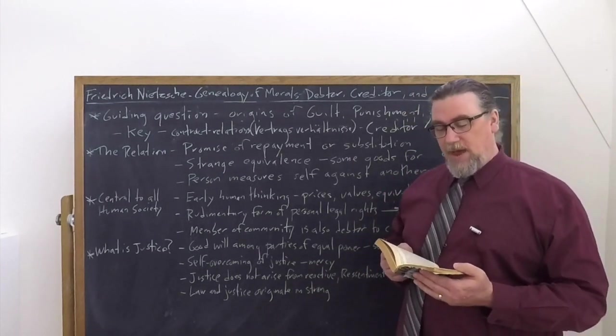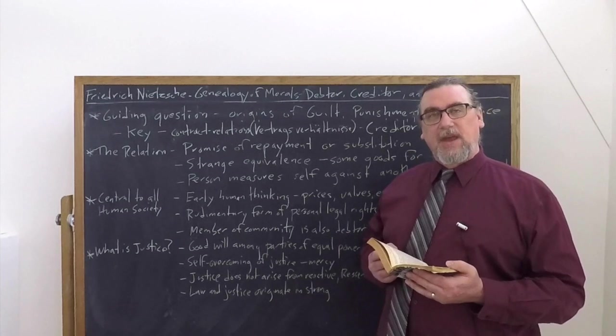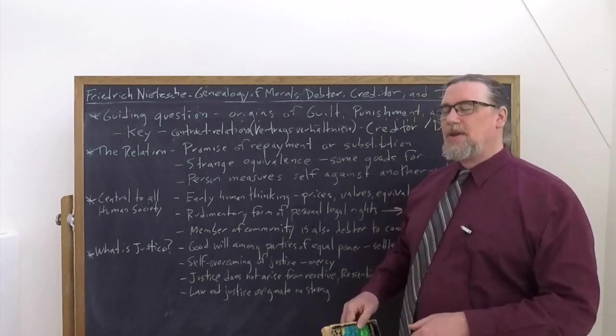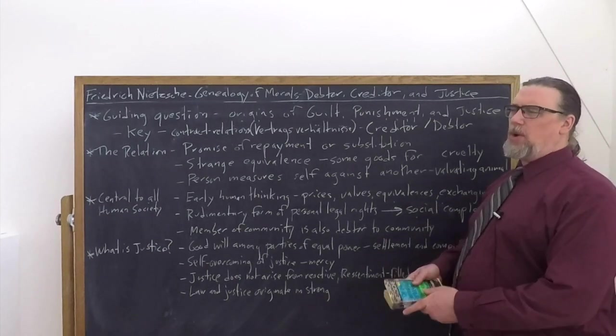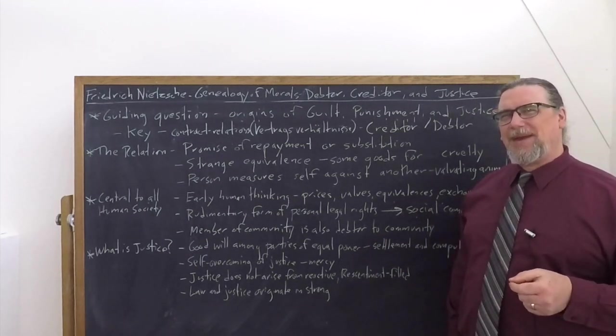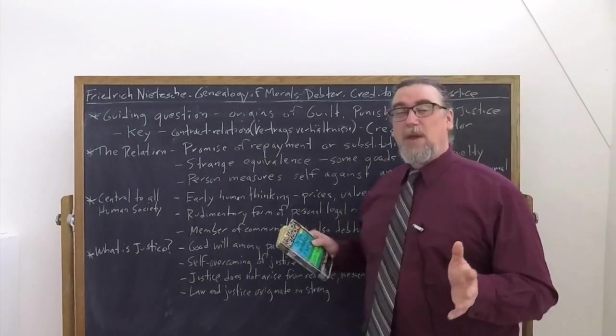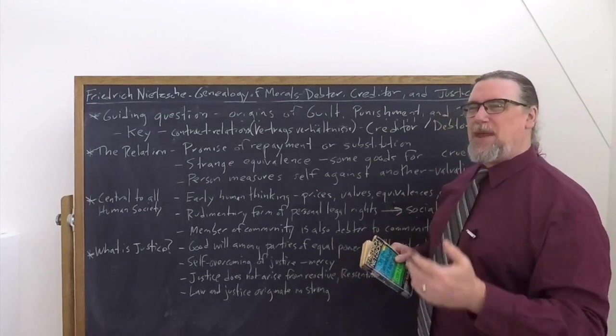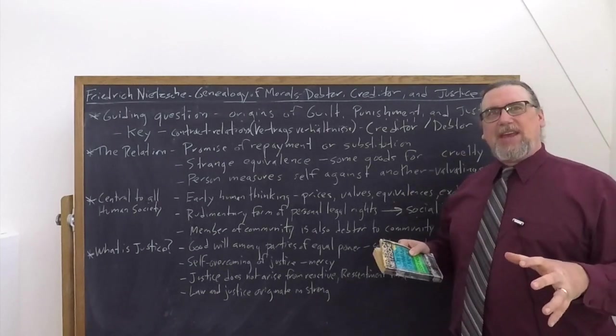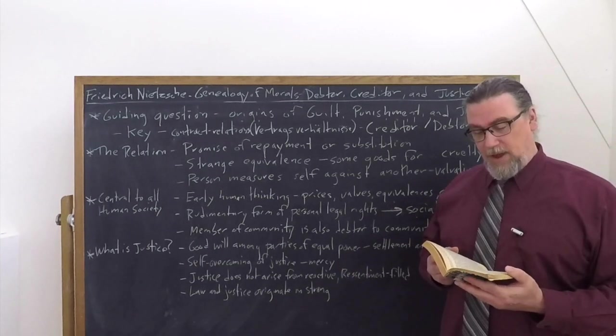And he talks about the human being developing into the valuating animal, the animal that assigns values, Vierta. So we've already seen this in the first essay with the primary valuation, the priestly valuation, the trans valuation that consists in good and evil. Now we're talking about another kind of valuation that Nietzsche sees happening here. And he tells us that this is something that preoccupies the earliest thinking of human beings. He says, setting prices, determining values, contriving equivalences, exchanging, you can find these in every grade of civilization. These preoccupied the earliest thinking of man to such a great extent that in a certain sense, they constitute thinking as such.